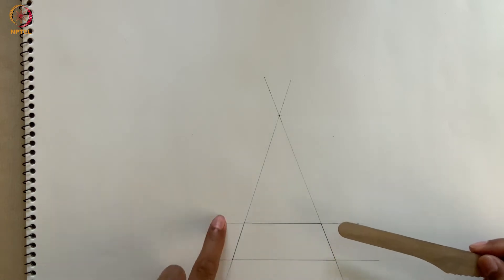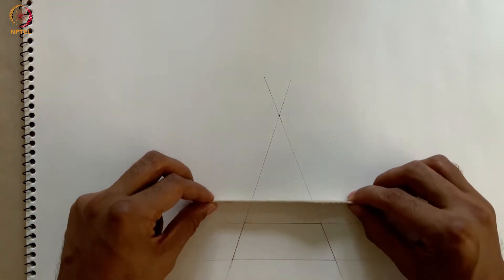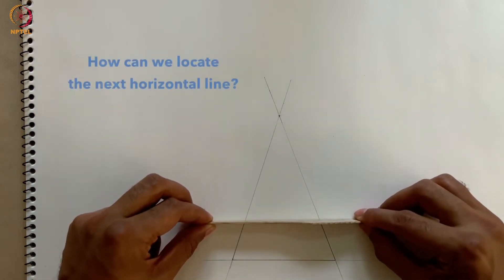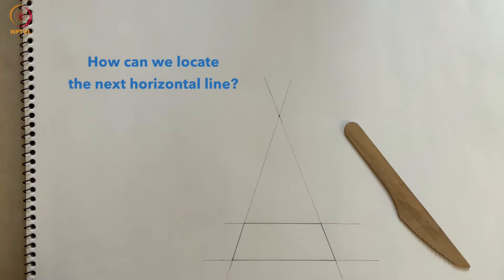We'll start with a trapezoidal tile. The top and bottom edges are parallel, and the side edges meet at a vanishing point. Our task is to construct the next horizontal line, but how can we pinpoint where the next horizontal line will be located?